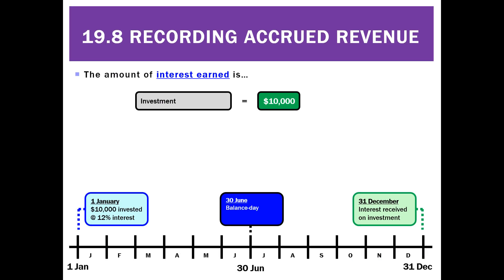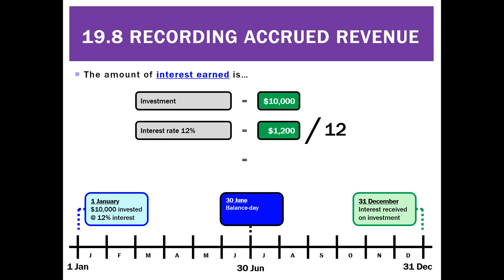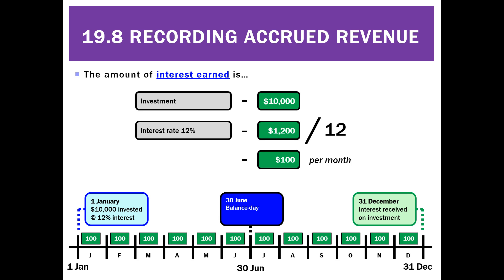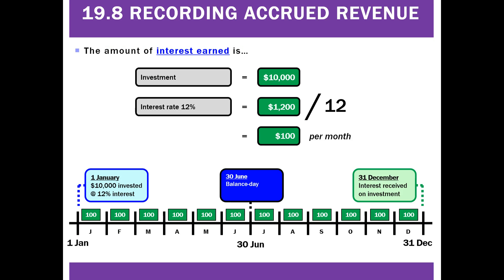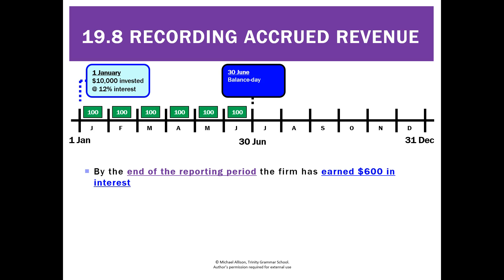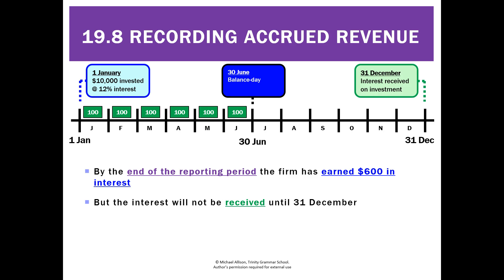So exactly how much? We've invested $10,000 and we're going to earn 12%, so that'll be $1,200 in a year. Let's divide that by the number of months, which is 12, and we're going to earn $100 per month for the whole year. So firstly, we've got $100 of interest being earned every month. But on balance day the problem is we have earned $600 worth of interest but we haven't received it yet — we're not going to get that until the end of December.